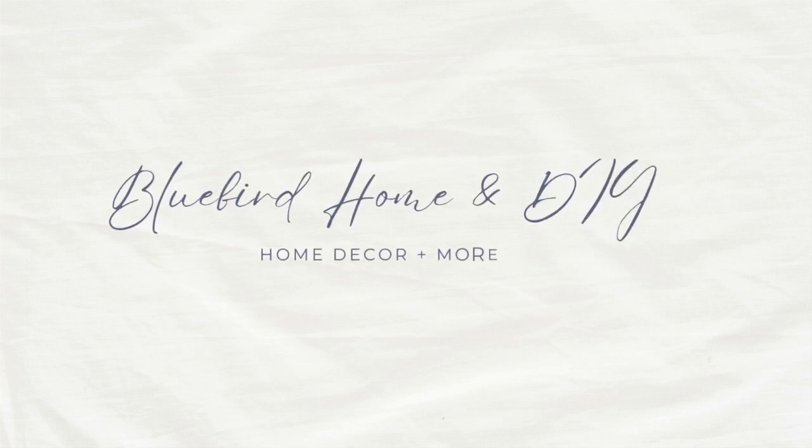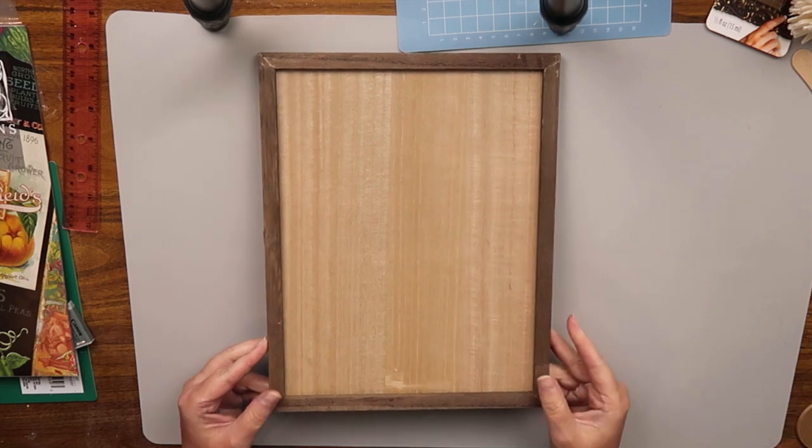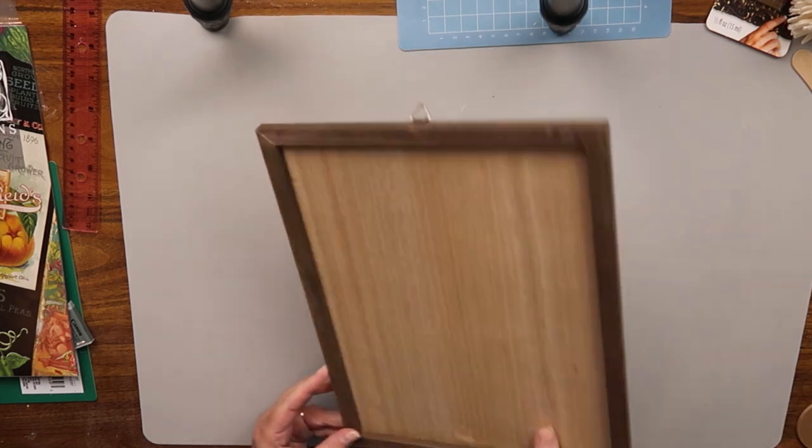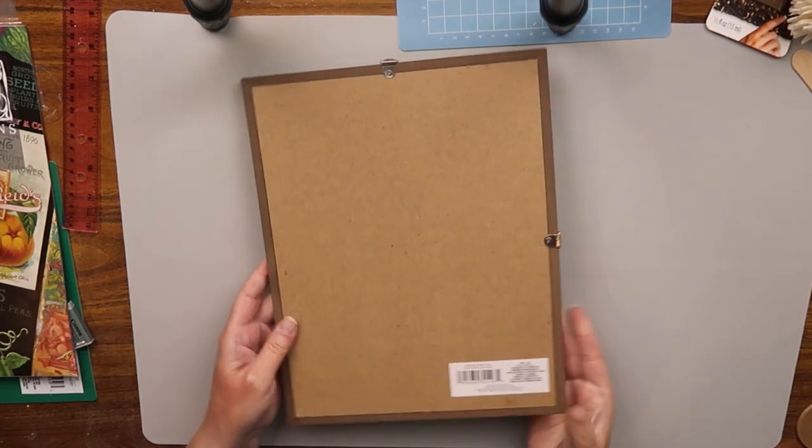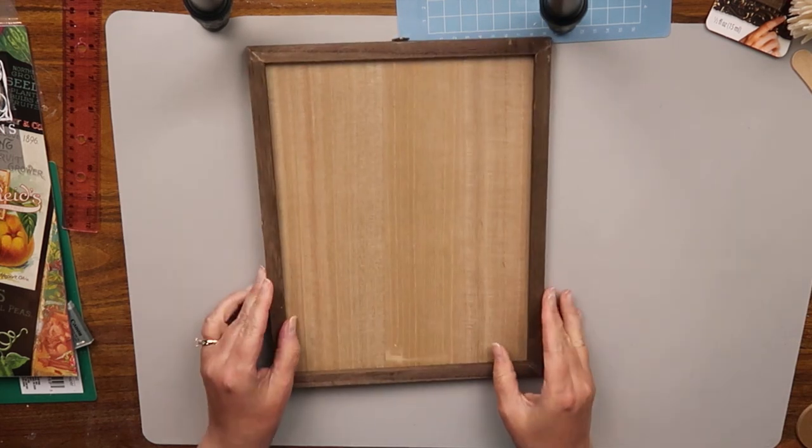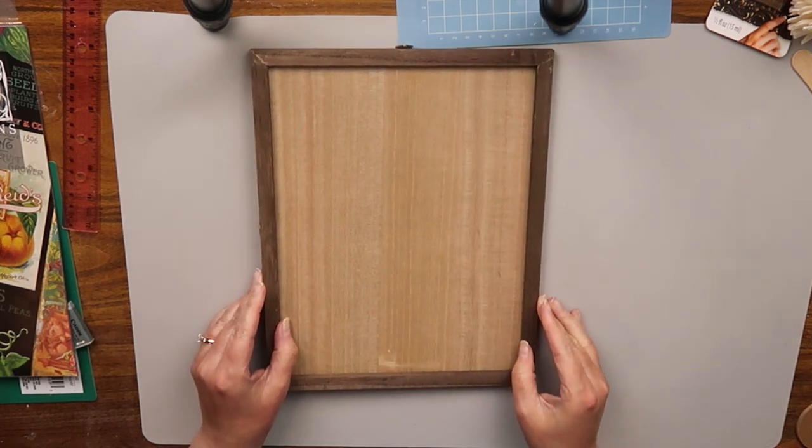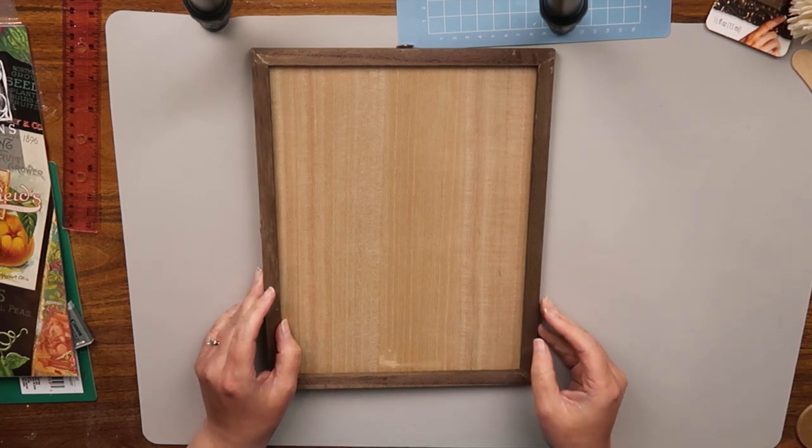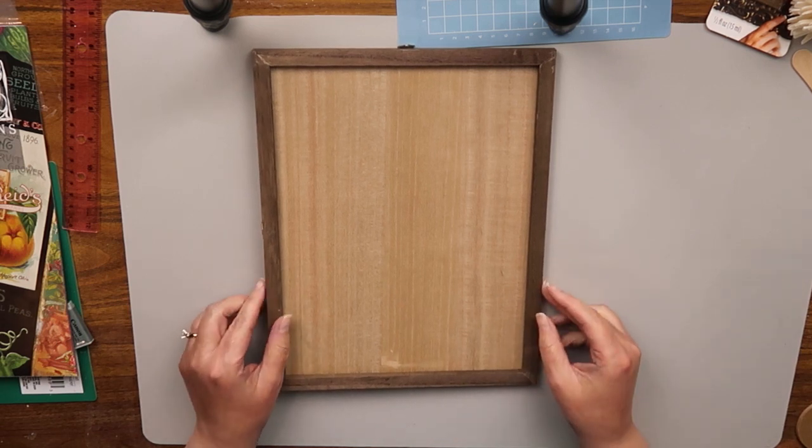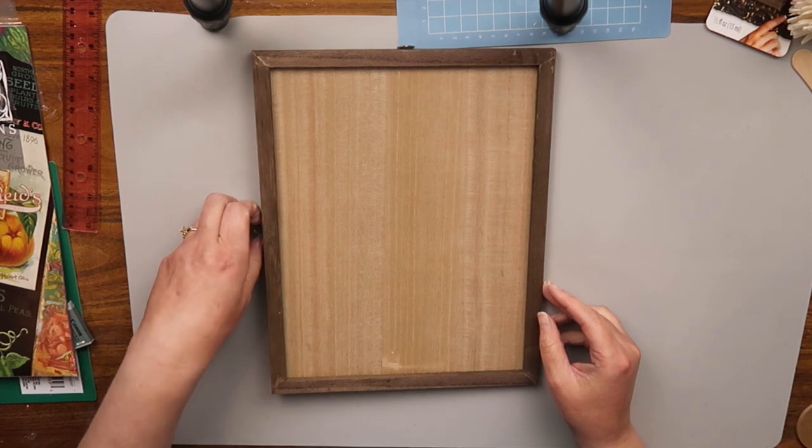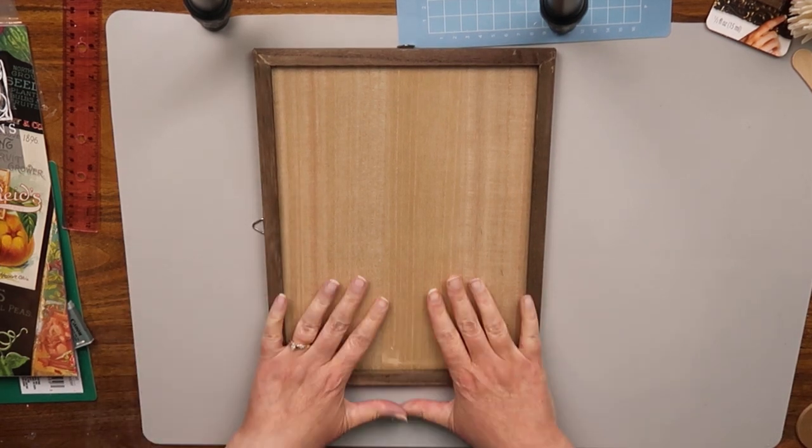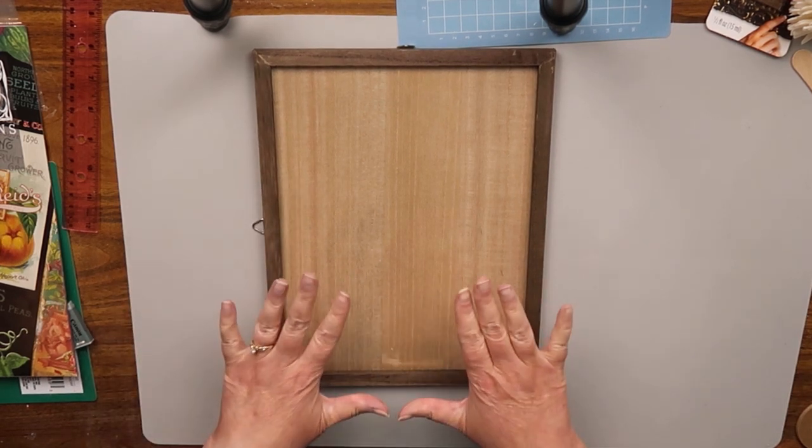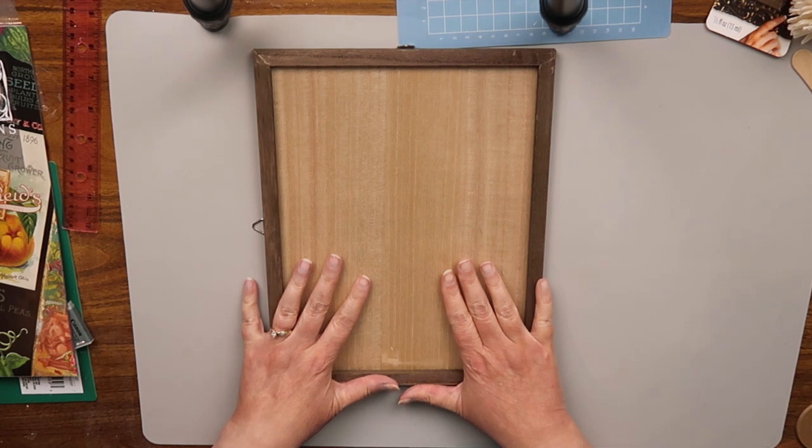Today we're doing Dollar Tree DIYs using Iron Orchid Design Seed Packet Catalog Transfers. This is a frame that I found at the Dollar Tree, not my normal Dollar Tree, but I went to a different one and I'm so glad that I did because my Dollar Tree doesn't have these frames. I just thought this would be perfect for this particular DIY with the transfers today. So we're going to go ahead and use this for our first DIY.